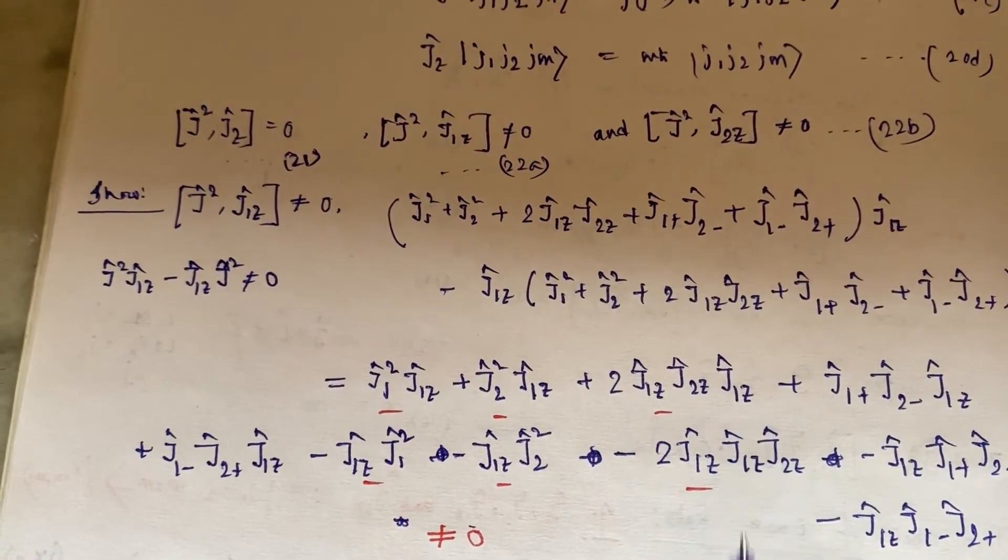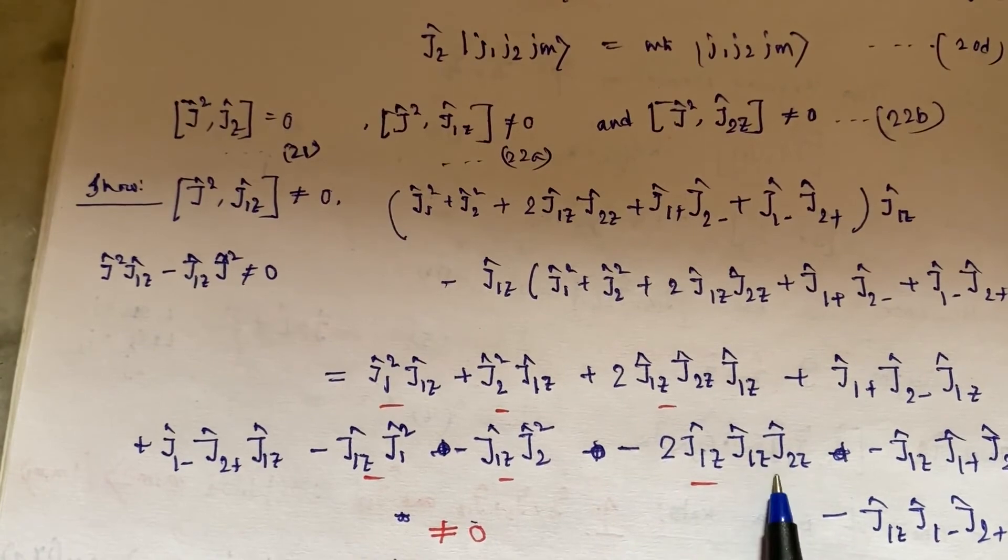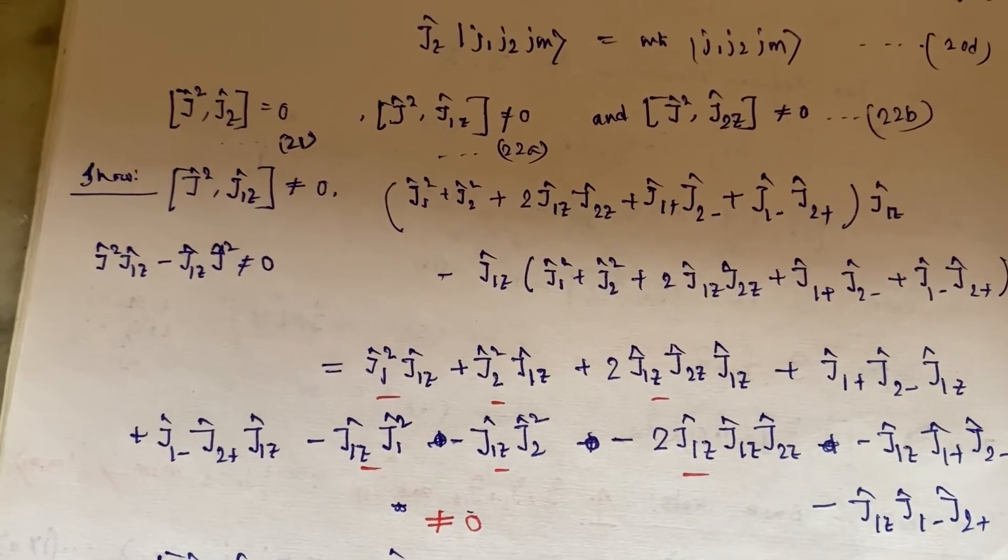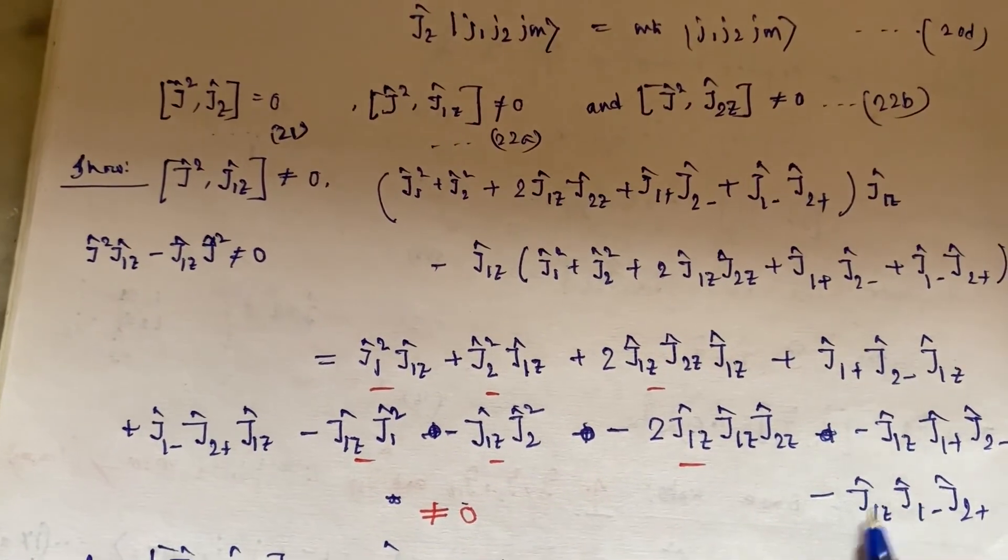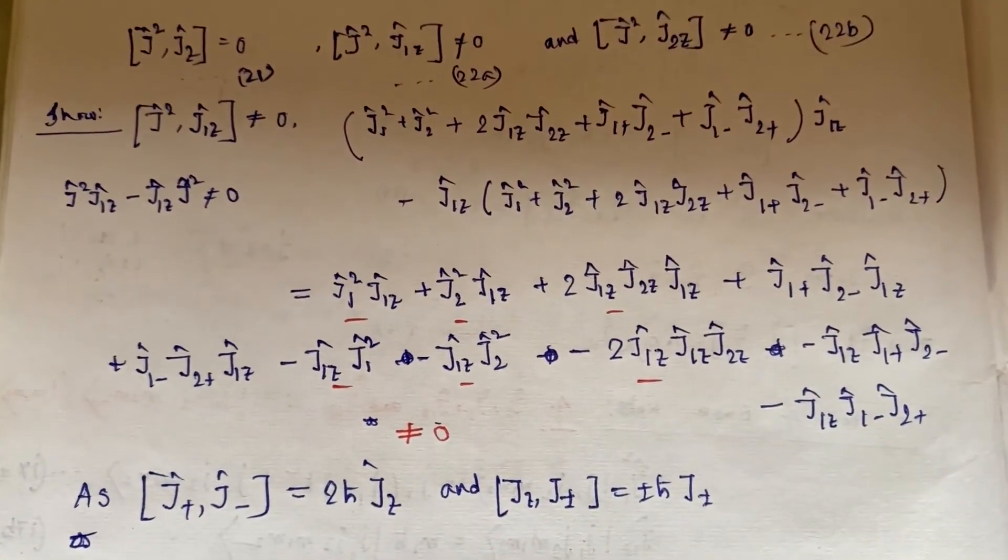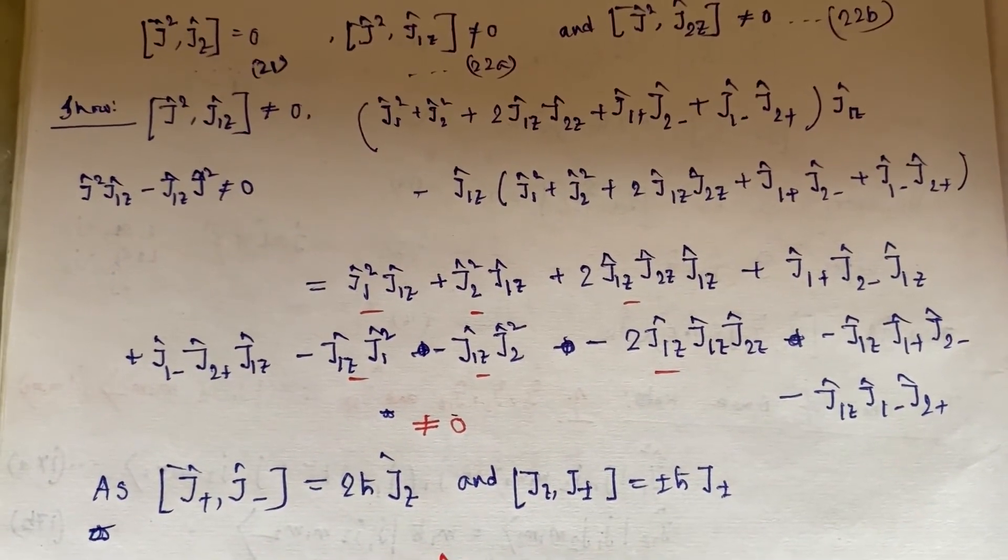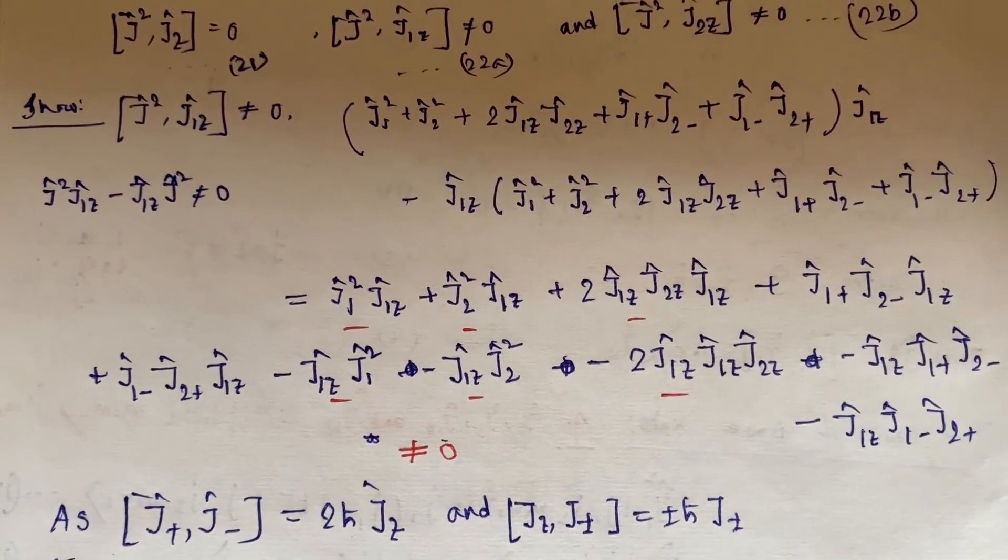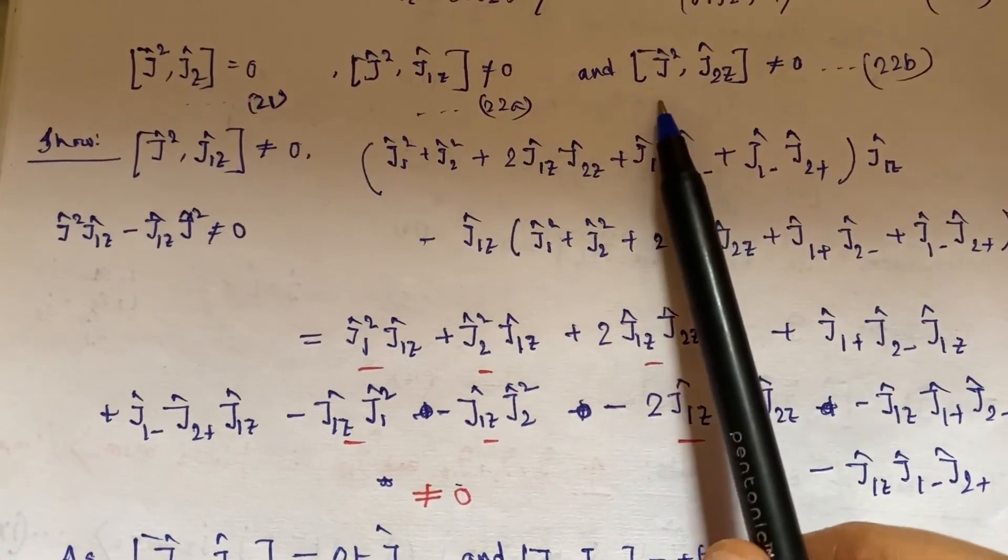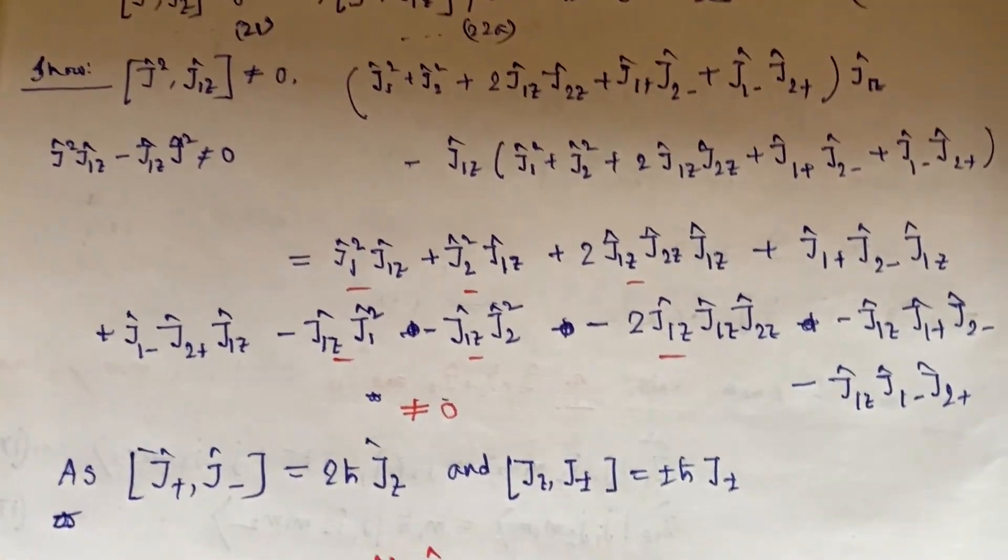So this becomes this. So this term and this term cancel out, but these terms will survive because of these relations. So J² and J₁z will not commute. J² and J₂z will not commute.